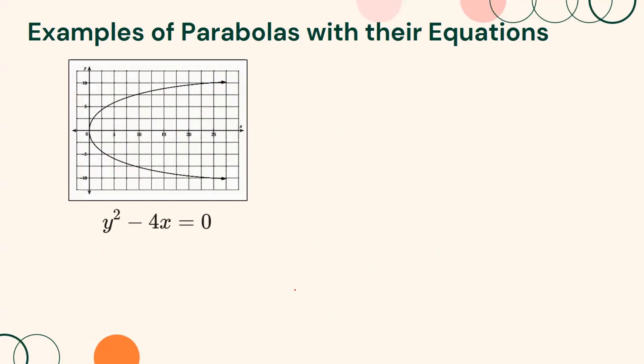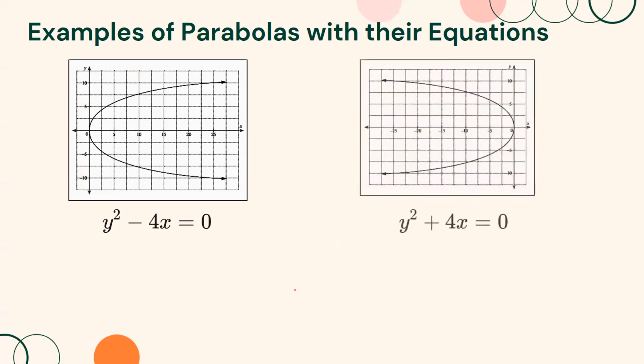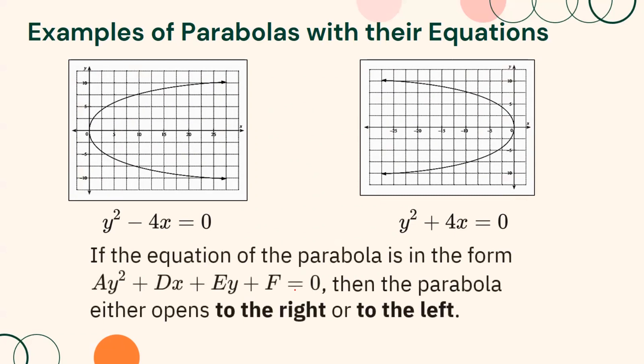Here are more examples of parabolas. This is the graph of y² − 4x = 0, and this is the graph of y² + 4x = 0. If the equation of the parabola is in the form ay² + dx + ey + f = 0, then the parabola either opens to the right or to the left. Therefore, if the squared term is y, the parabola either opens to the right or to the left.